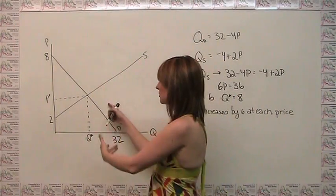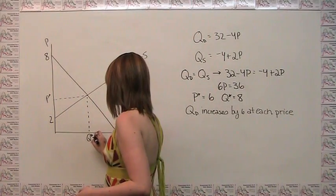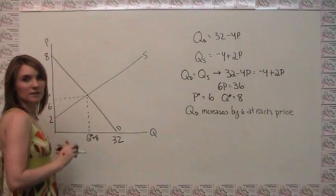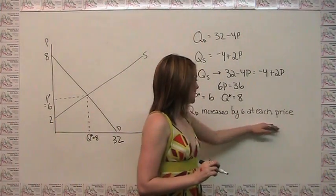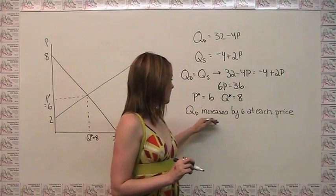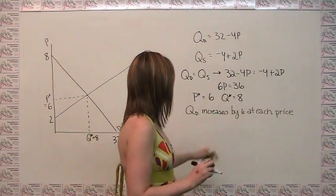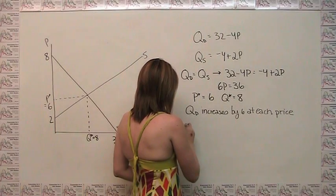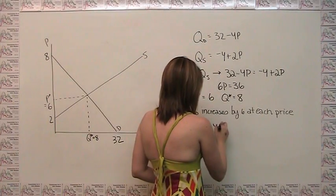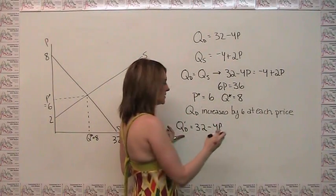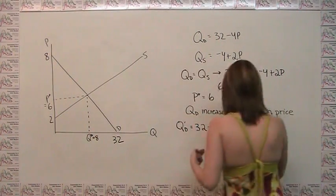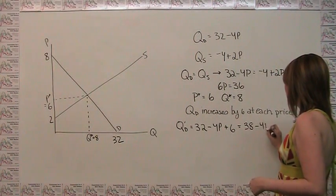So we can label that on our graph: q* equals 8 and p* equals 6. Now we want to take into account this increase in demand. If quantity demanded increases by 6 at each price, then our new quantity demanded is equal to 32 minus 4p plus 6, which is 38 minus 4p.